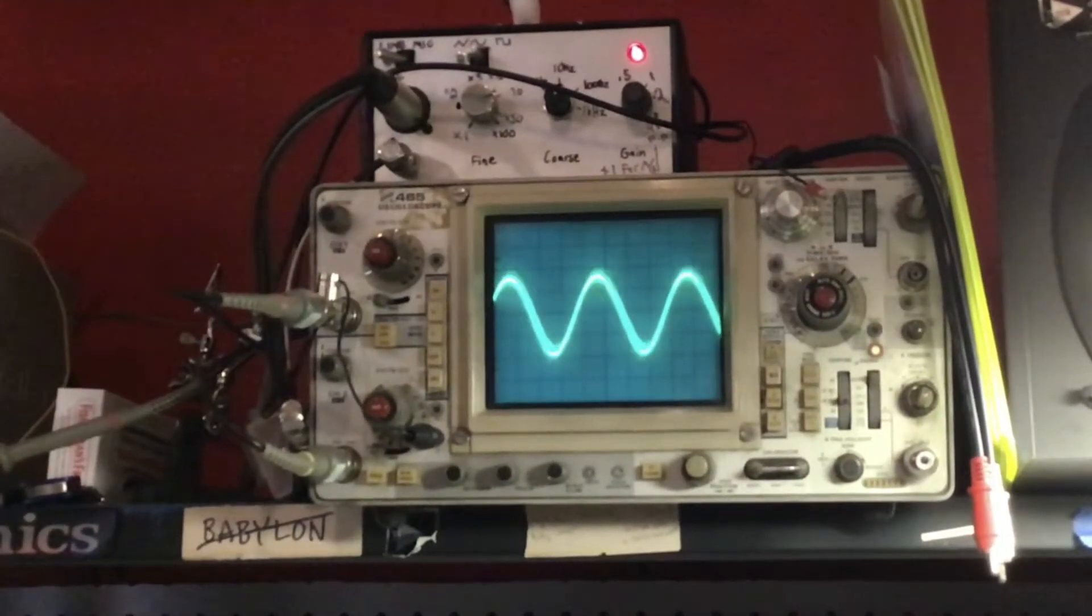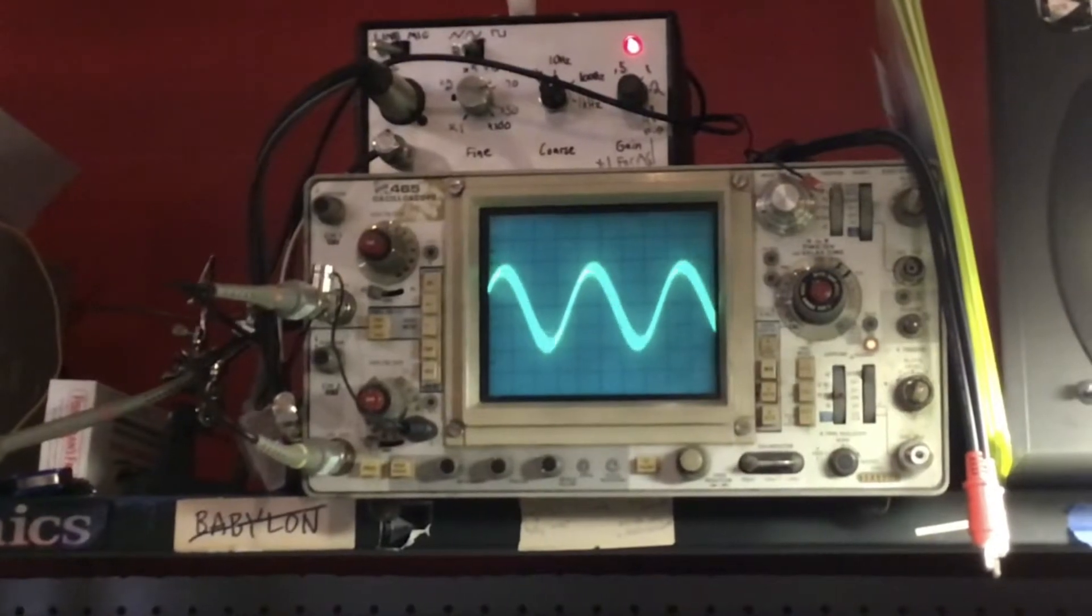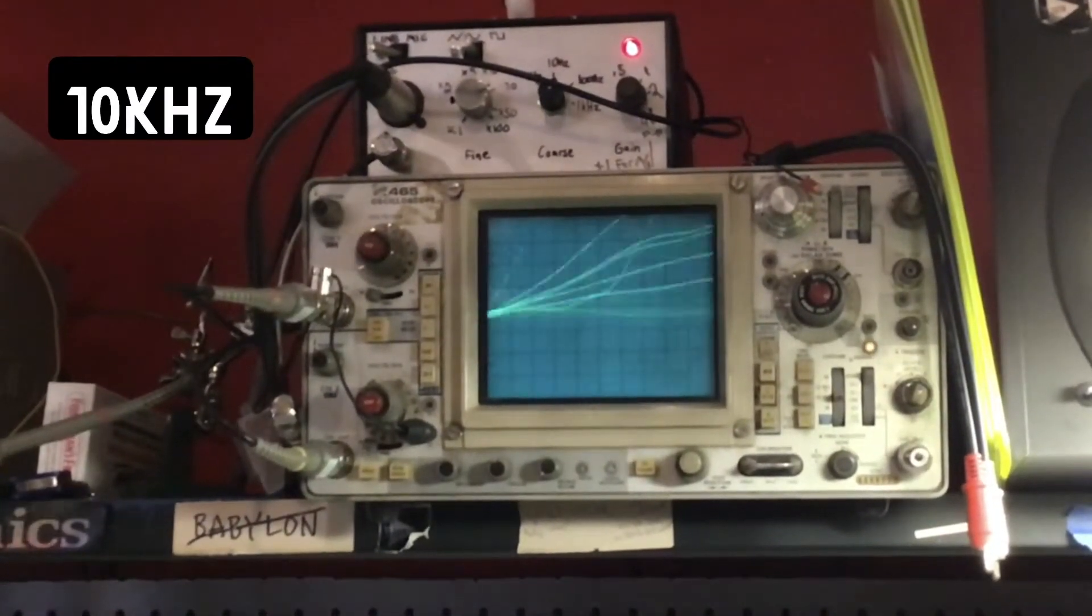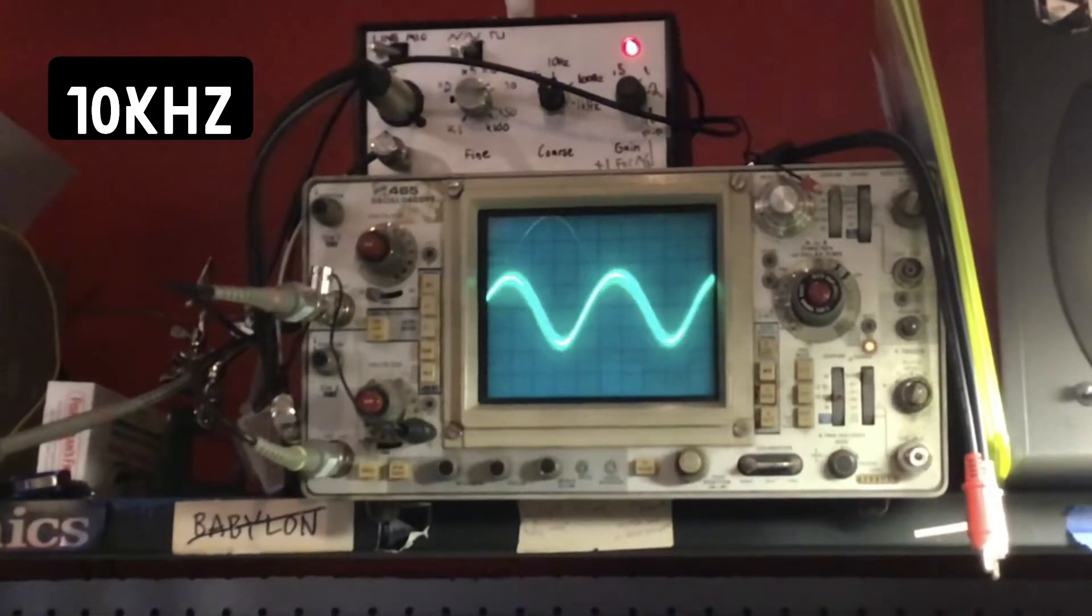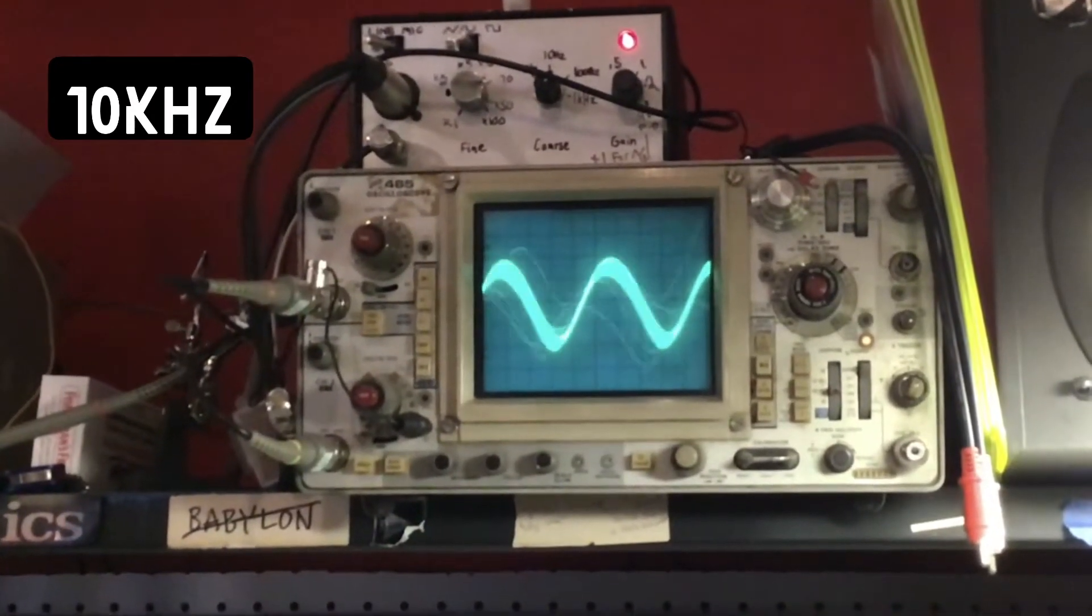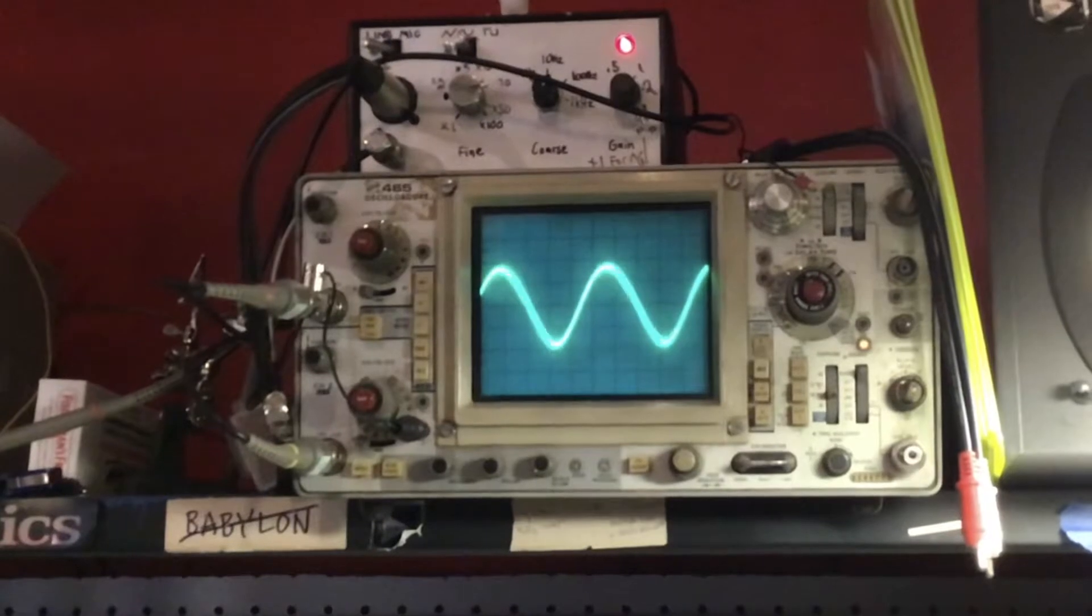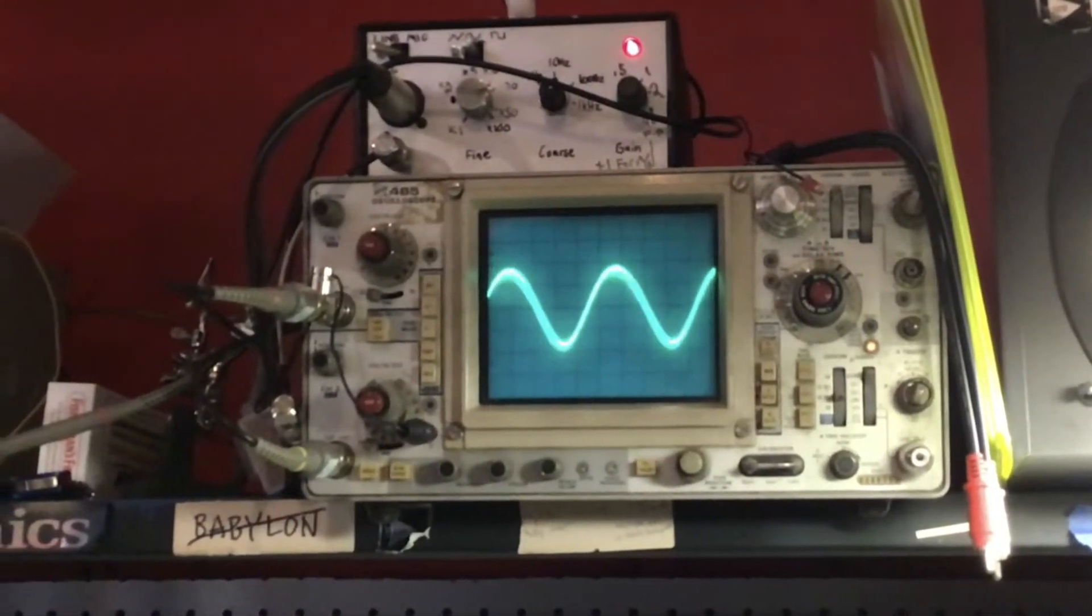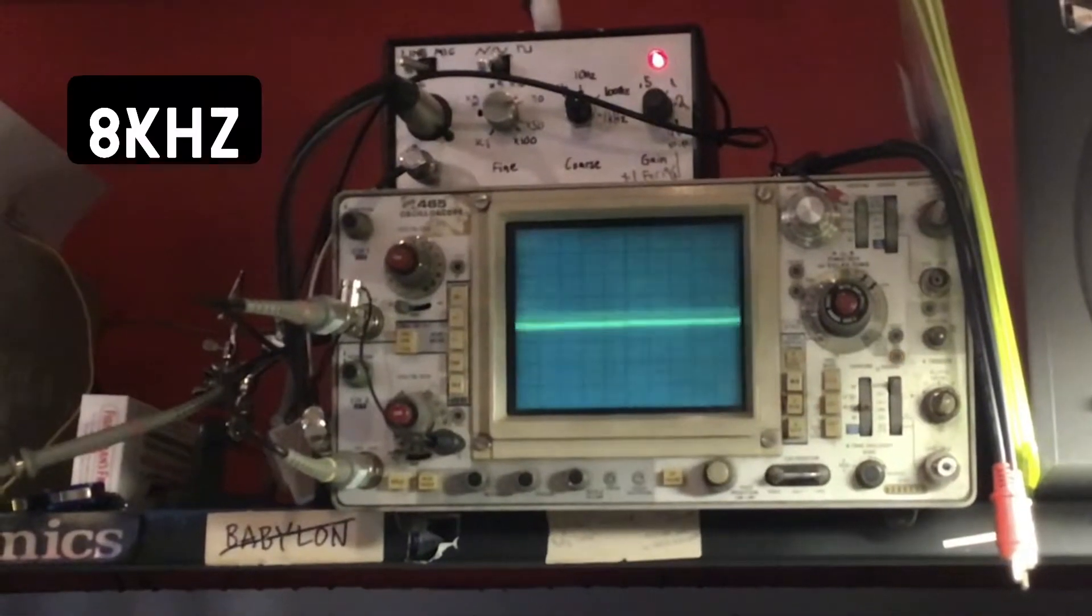So 15K looks nice and clean, 12 and 10K ever so slightly distorted sine wave, but not a deal breaker necessarily. Definitely we've seen worse, and this is pretty good.